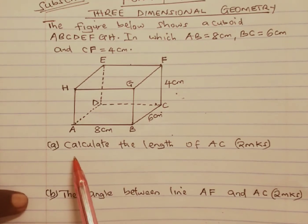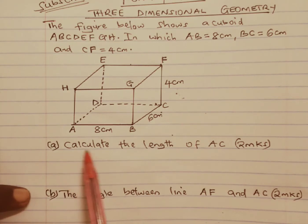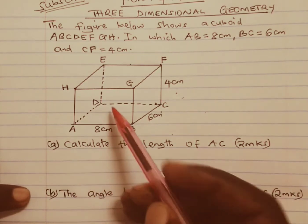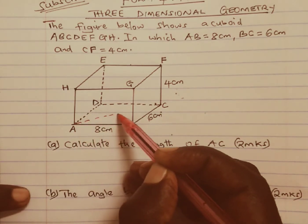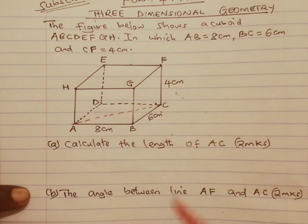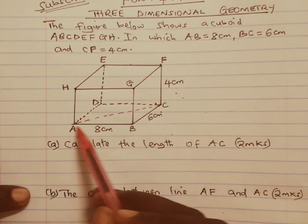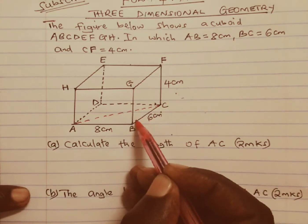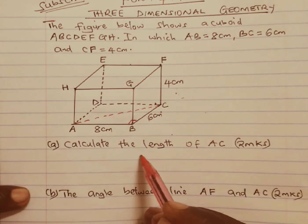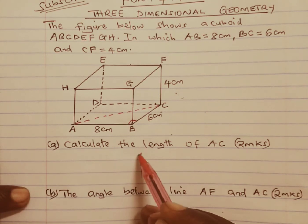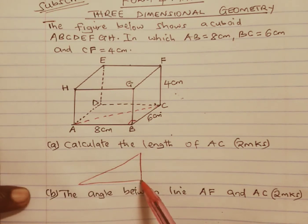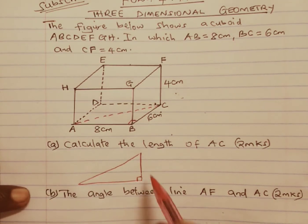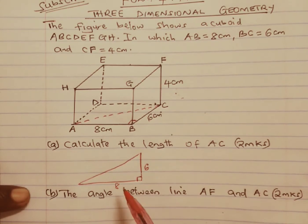The first part asks us to calculate the length of AC. We can draw a broken line from A to C to realize that AB and BC meet at 90 degrees. Therefore we can extract this triangle where the right angle is 90 degrees, one side is 6, another is 8, and we need AC which is the hypotenuse.